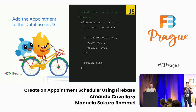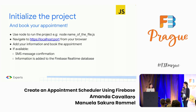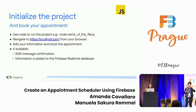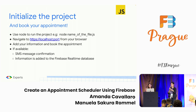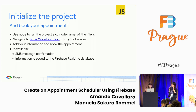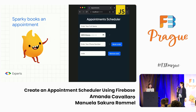All the information is added to the database, including the code and the user ID generated with the UUID dependency. To run the app: use Node to run the main JavaScript file, it runs on a port, you go to localhost in your browser, add the appointment information, and book everything. If it's available, there's an SMS confirmation message and the information is added to the Firebase real-time database. Sparky is going to book an appointment right now — he adds everything and it's working.